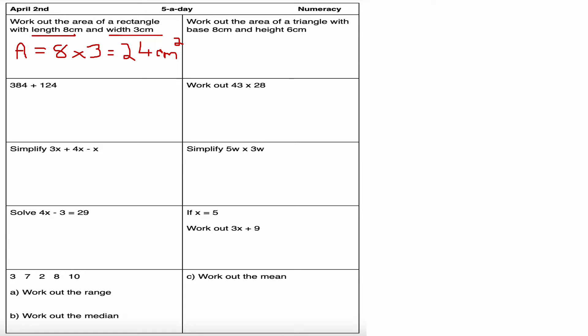Work out the area of a triangle with base 8 and height of 6. The area of a triangle is base times height divided by 2, so it's 8 multiplied by 6 and all divided by 2. 8 times 6 is 48, 48 divided by 2 is 24.